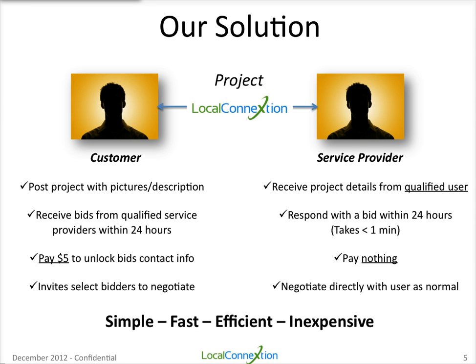All you have to do is go to Local Connection, register, and select your category as a service provider. Then you'll start getting leads coming to your email. Right from your mobile device, you can click a link and place a bid — it takes less than a minute once you get good at it. You can look at the description and the pictures. The bid you make is an estimate bid; you don't have to finalize your bid until the customer starts communicating with you through the private message board. We're just connecting you — we're not getting involved. You can even pick up the phone and call the customer once they unlock their bids.